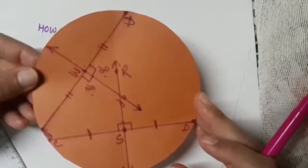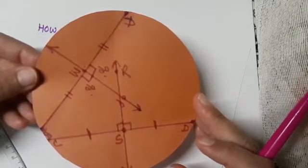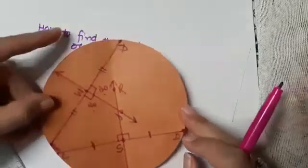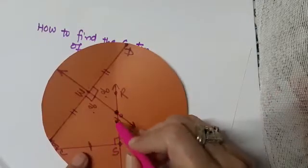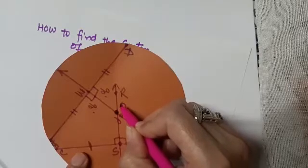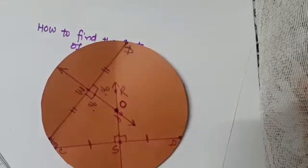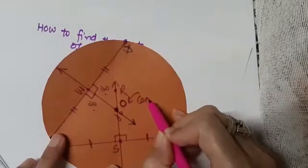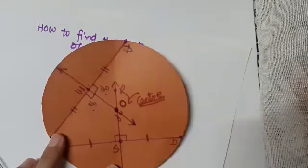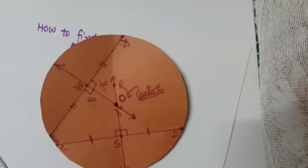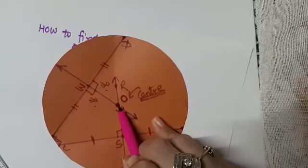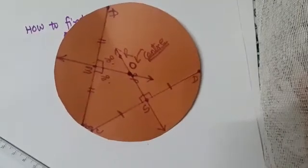Now notice carefully and make some observations. Both perpendicular bisectors meet at a point, and this point of intersection — I'm marking it as O — is the center of the circle. Perpendicular bisectors of chords pass through the center of the circle; this is a basic result which we have used to find the center.